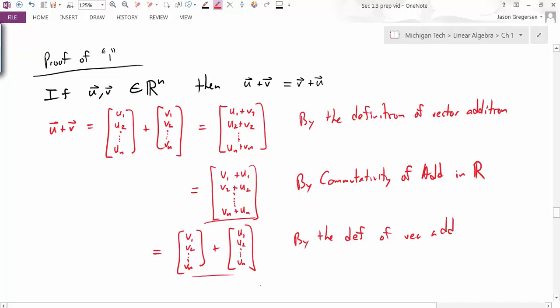And of course, if I just clean up my notation here, this is just equal to v plus u. So in three steps, I've shown that u plus v is equal to v plus u, and that completes this proof.